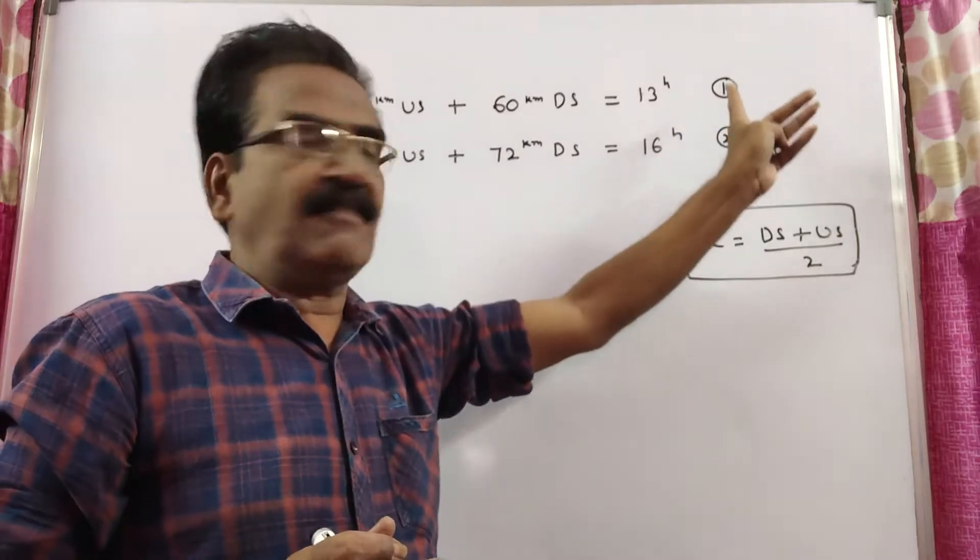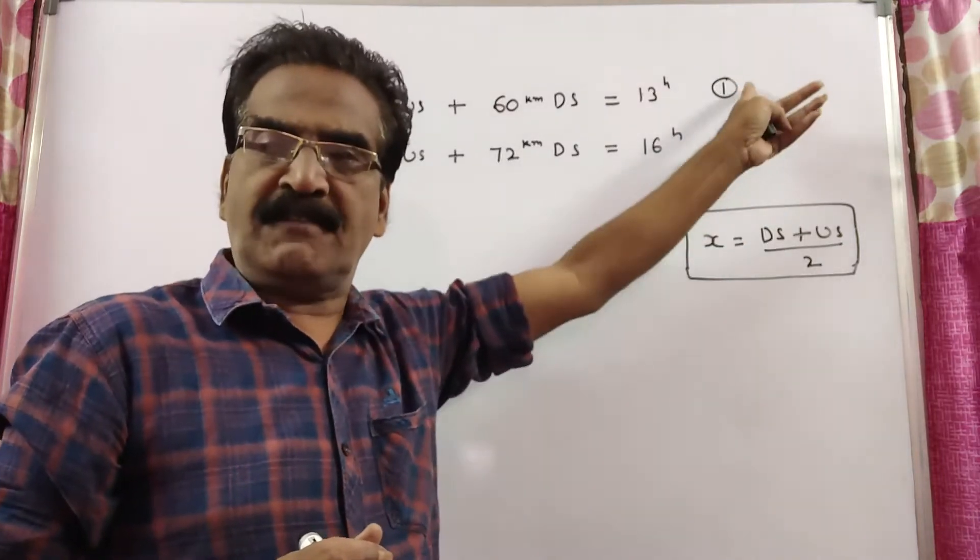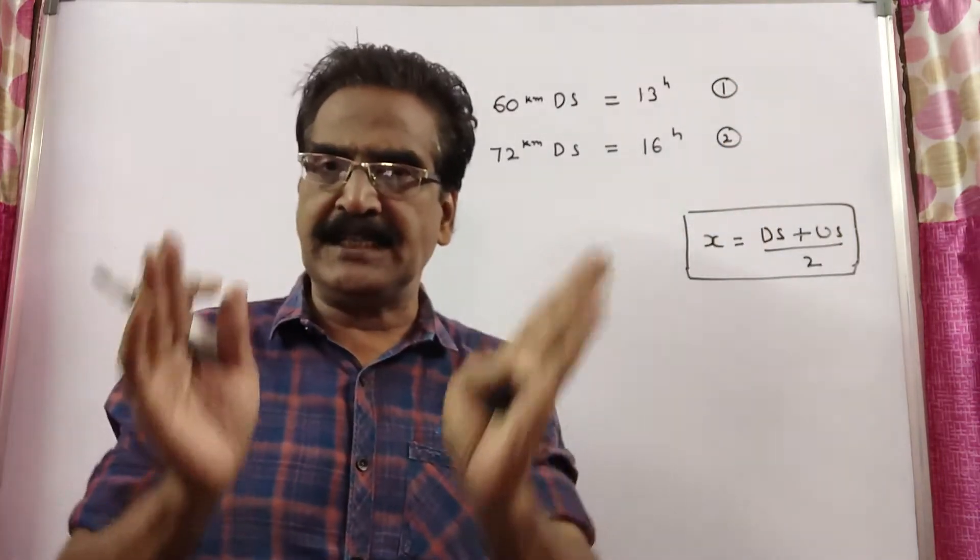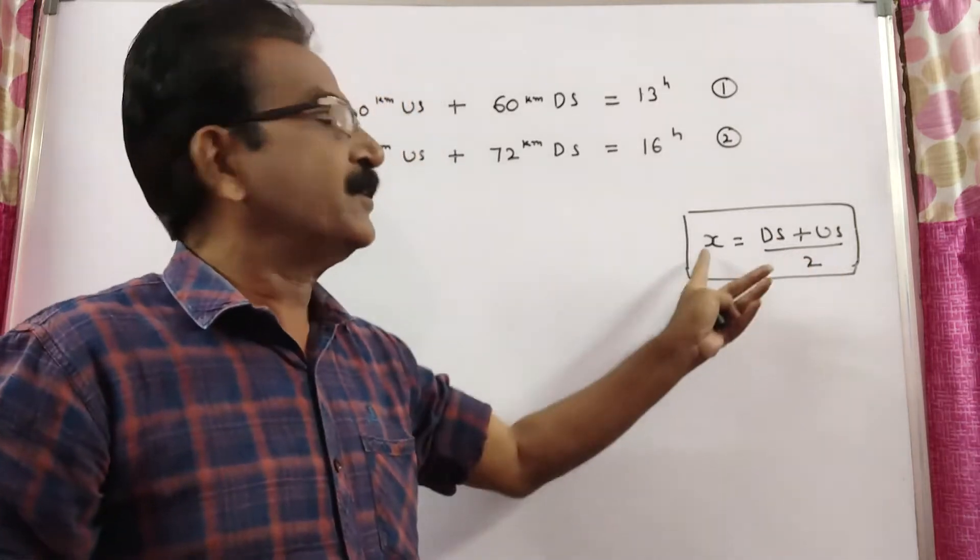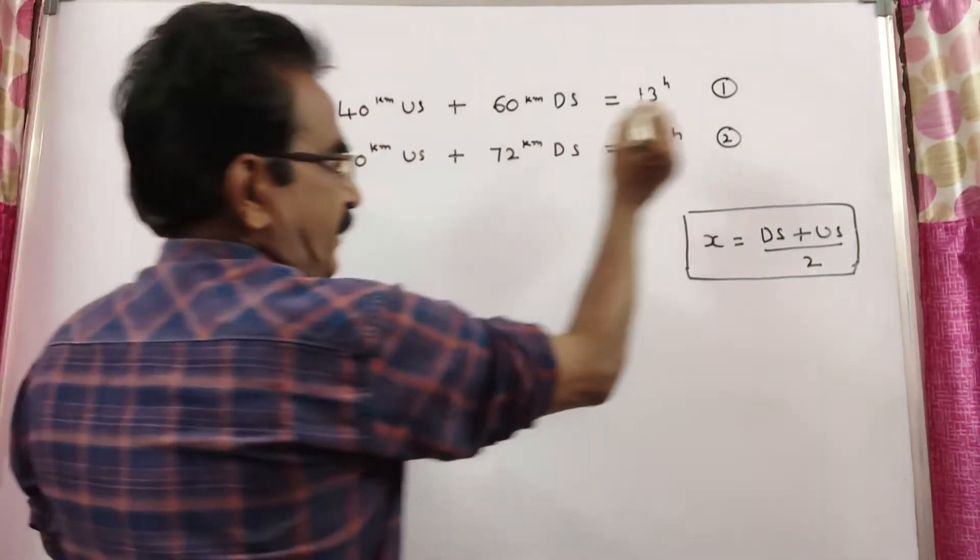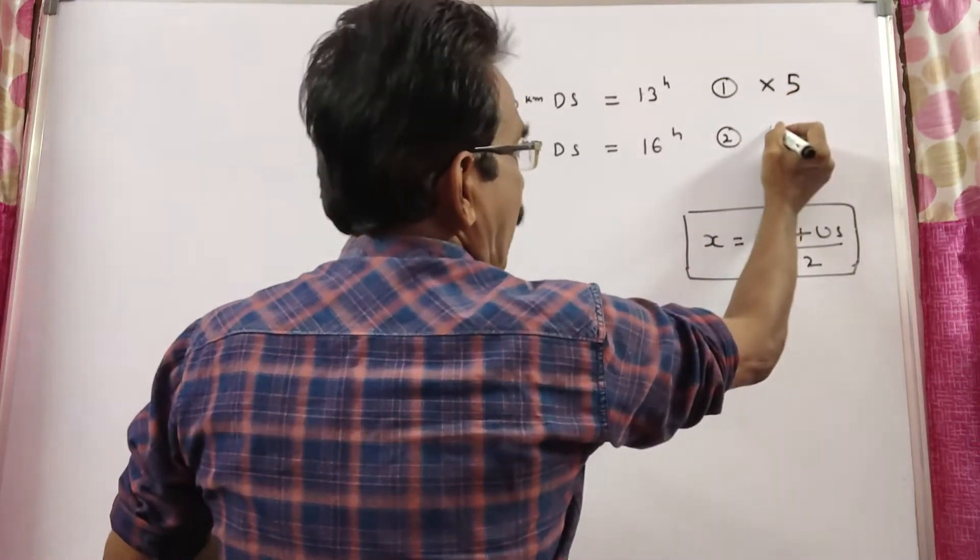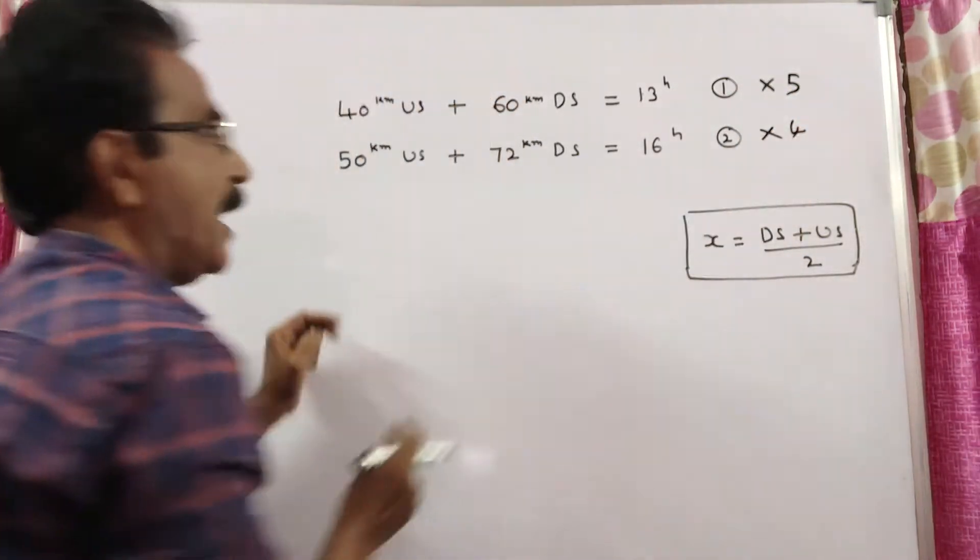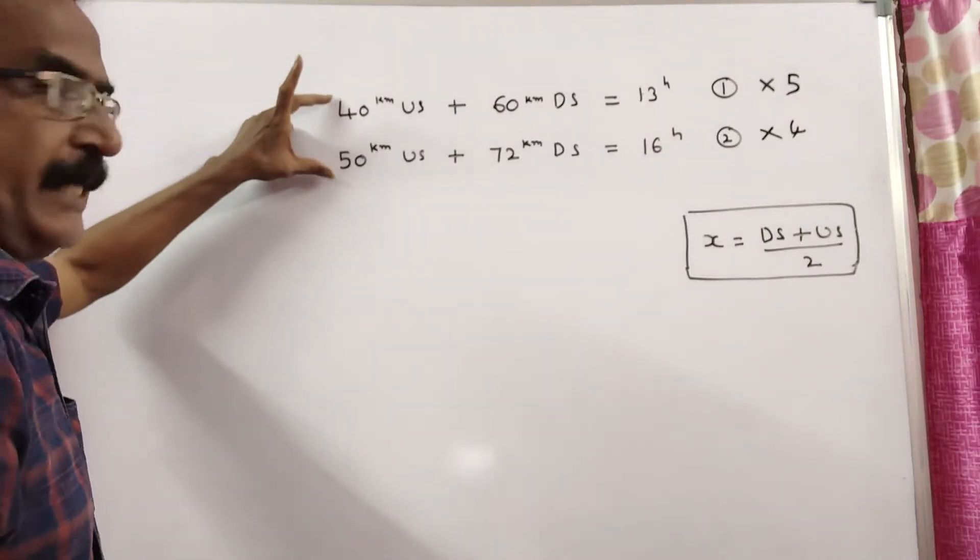So, say this is equation 1, say this is equation 2. By solving these two equations, we can find US and DS and then you can find x. See friends, I am multiplying the first equation by 5 and second equation by 4. I am trying to equate these two times.